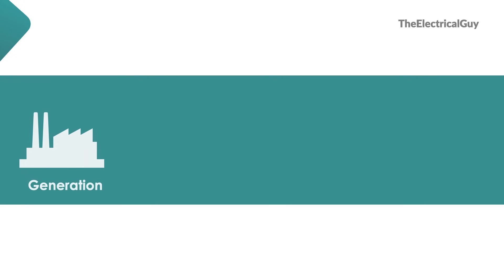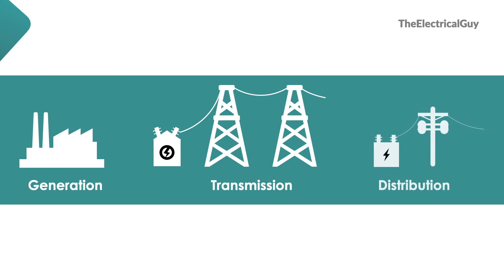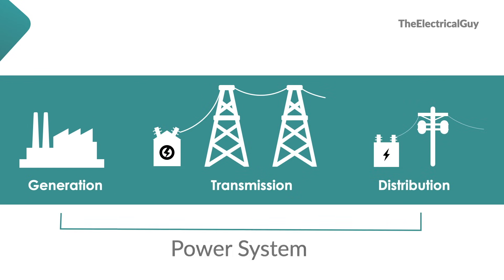If you are in a rush, the answer is: a power system is a network which consists of generation, transmission, and distribution of electricity. Everything put together — generation, transmission, and distribution — is what we call a power system. That's the shortest answer, but if you want a detailed explanation, you need to watch the video.